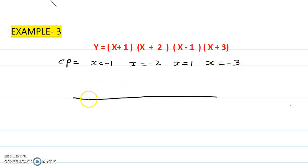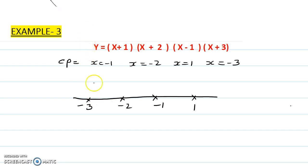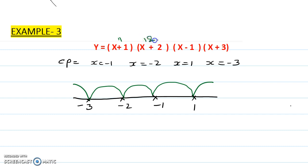Make the bridge shape diagram by arranging the critical points in order: -3, -2, -1, and 1. Take any number greater than 1 — let's take 10. Putting x=10: 10+1=11, 10+2=12, 10-1=9, 10+3=13. Multiplying gives positive. Following alternating signs: positive, negative, positive, negative, positive.